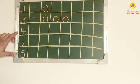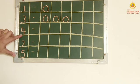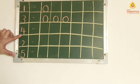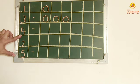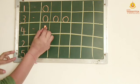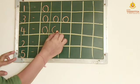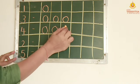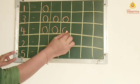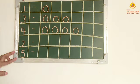Now children, this is number 4. So children, tell me how many circles you have to make? 4 circles. Let's start. 1, 2, 3, and 4. Stop.